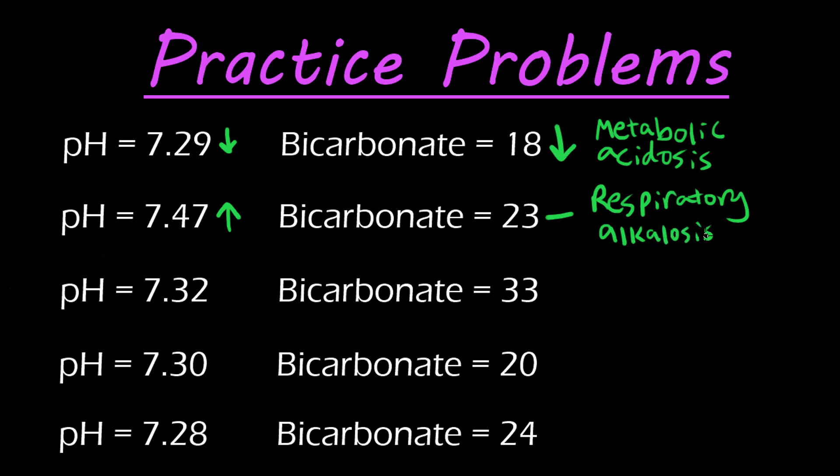In this example we have pH 7.32. This is below our normal range. Bicarbonate 22 to 26, this is above. These are going in opposite directions, not the same, so it's going to be respiratory acidosis from our pH being below the normal range.